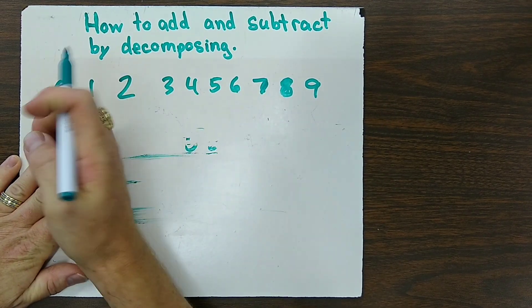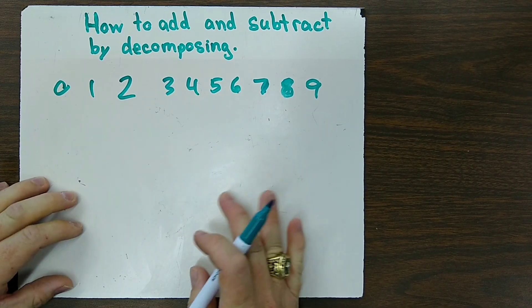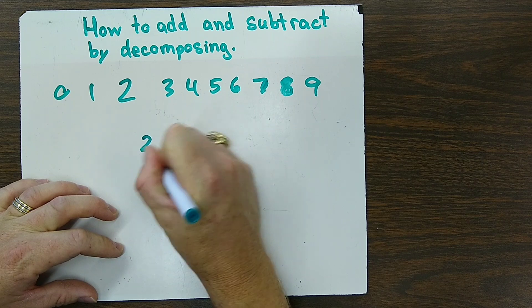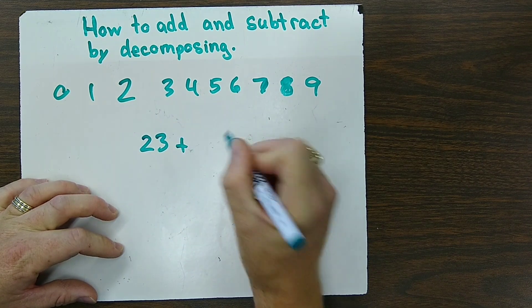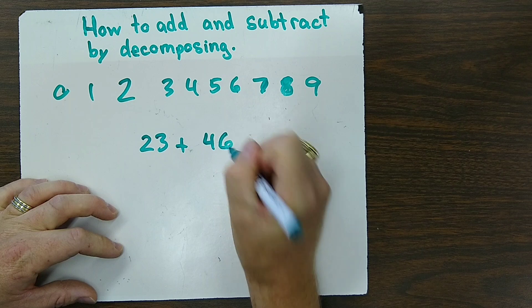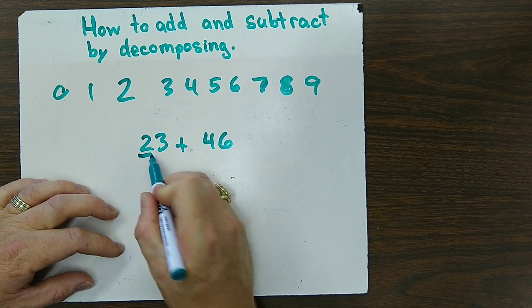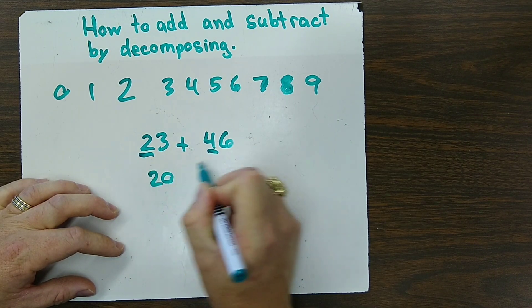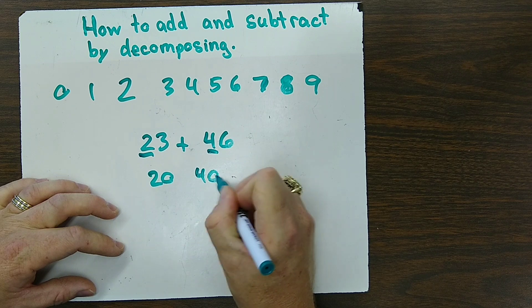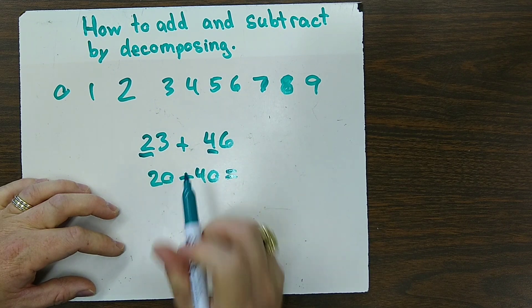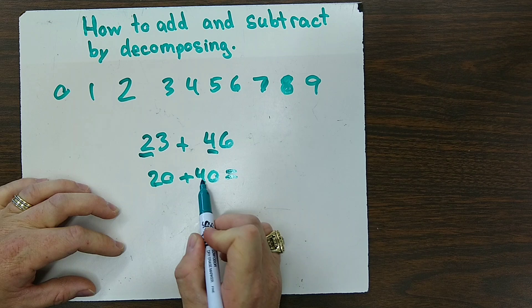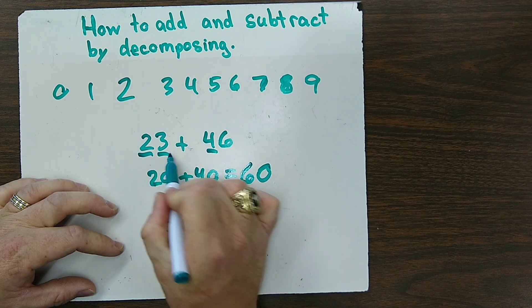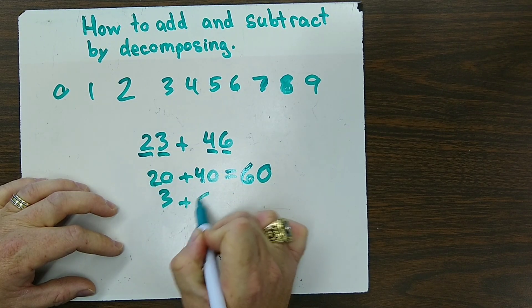So in order to add and subtract two digit numbers, we'll go ahead and try one out here without any regrouping. So let's do 23 plus 46. We're going to go ahead and first add our values of our tens. So the 2 is worth 20. The 4, because it's in the tens place, is worth 40. We'll put those together and you use your basic facts for this. 2 plus 4 gives you 6, so 20 plus 40 gives you 60. Add your ones together. 3 plus 6.